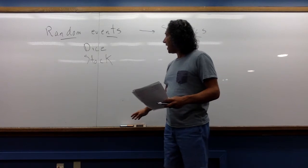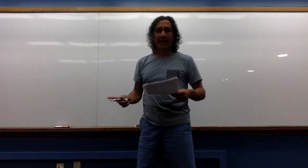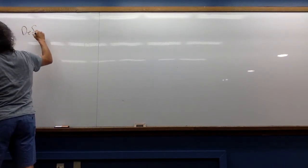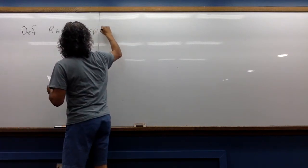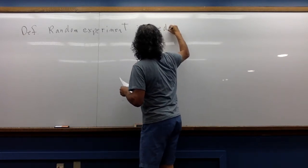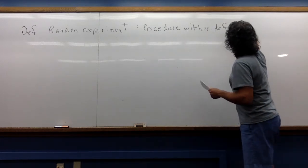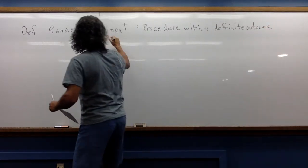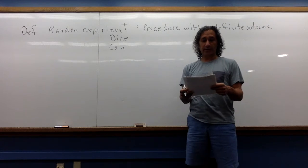So let's start now with some definitions so we can have a common set of language that we can use in thinking about probability. The first definition I want to talk about is a random experiment. And this is just a procedure with no definite outcome. So again, the dice example, you can flip a coin, you might get heads, you might get tails, you're not going to know until you actually do it.